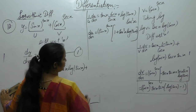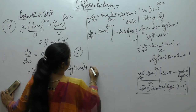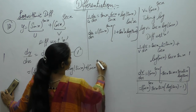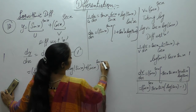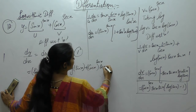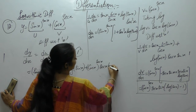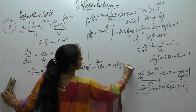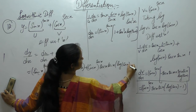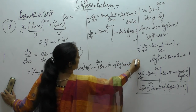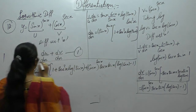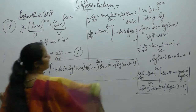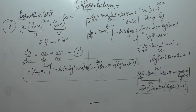Plus cos(x)^sec(x) · sec(x)tan(x) · [log(cos x) − 1]. So this is the value of dy/dx.